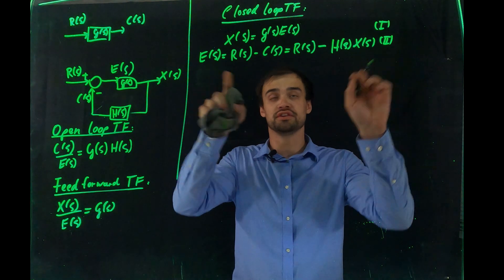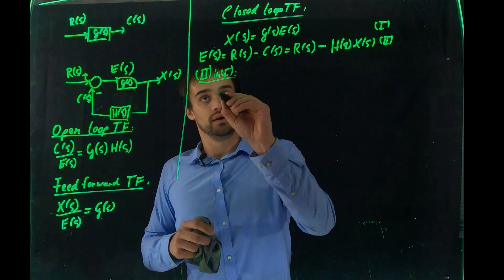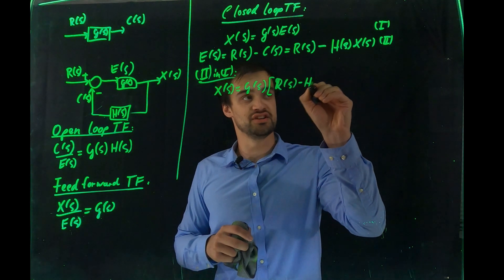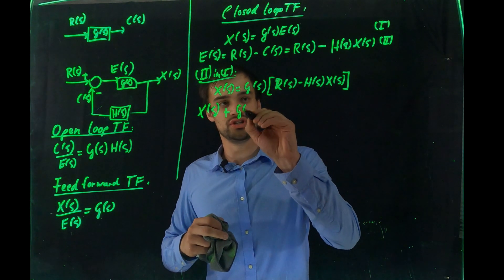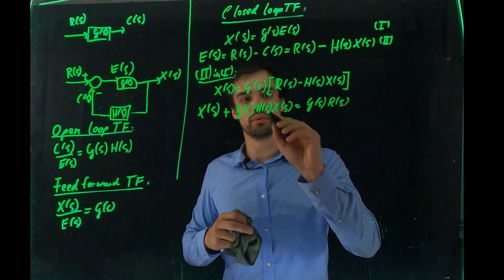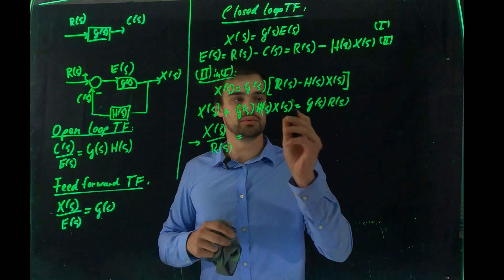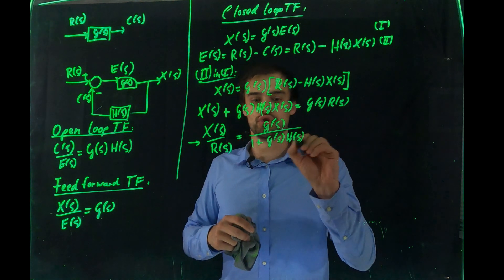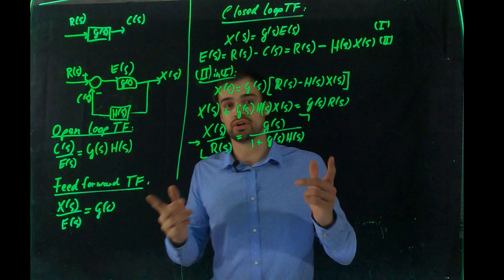We can substitute for C(S): C(S) equals H(S) multiplied by X(S). Plugging equation two into equation one gives X(S) equals G(S) multiplied by [R(S) minus H(S) times X(S)]. Bringing all X(S) terms to one side: X(S) plus G(S)H(S)·X(S) equals G(S)·R(S), so X(S)/R(S) equals G(S) over [1 plus G(S)·H(S)]. This is a very important rule to memorize for feedback loops.